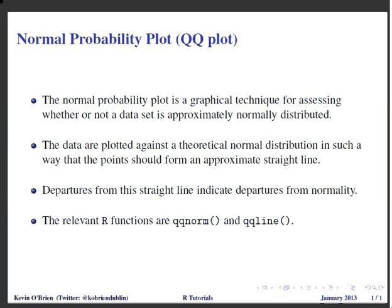The normal probability plot is a graphical technique used for assessing whether or not a data set is normally distributed. The data points are plotted against the theoretical normal distribution in such a way that the points should form a straight line.